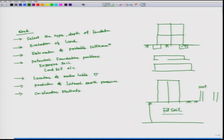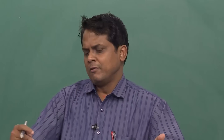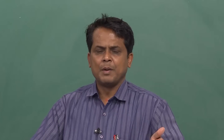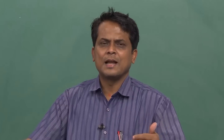From site investigations, this information is required. The second part is the location of the water table - most important. How far below the ground surface is it? If the water table is far below the ground surface, there is no change in soil capacity. But if the water table is at the ground surface, total stress becomes effective stress, pore water pressure increases, the gamma value becomes gamma effective, and the strength is indirectly reduced.